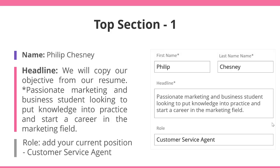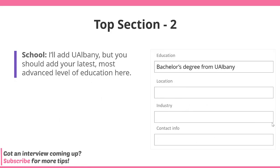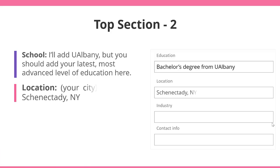For Role, add your current position — for example, customer service agent. For School, add your latest, most advanced level of education — for example, a bachelor's from UAlbany. For Location, add your city — for example, Schenectady, New York.